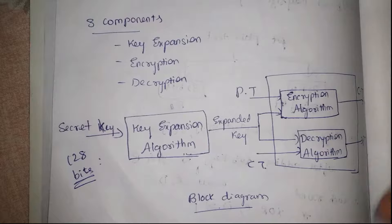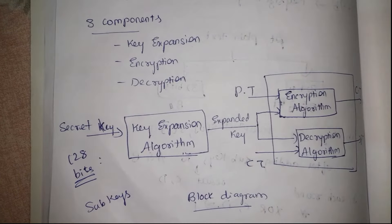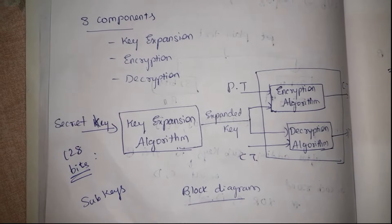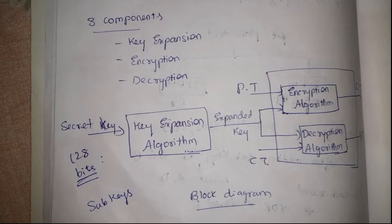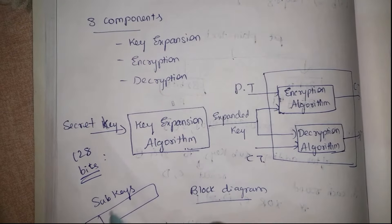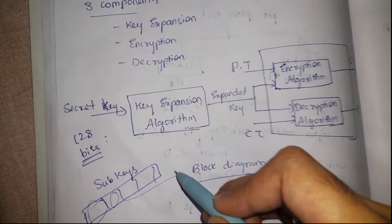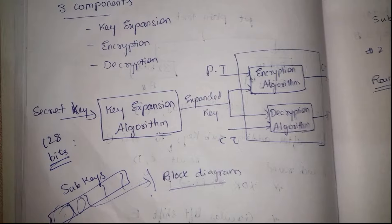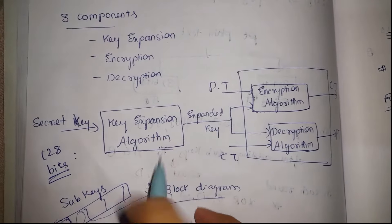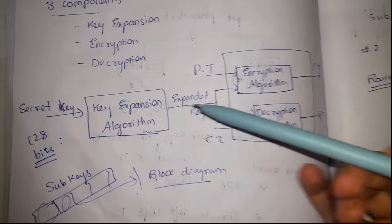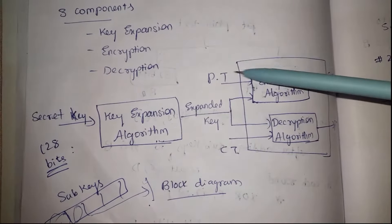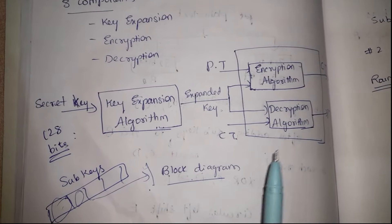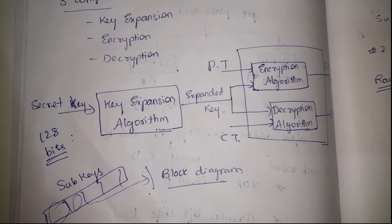Using this 128-bit secret key, the key expansion algorithm generates many sub-keys of various different sizes. Symmetric key encryption happens in a series of rounds, so in each round these sub-keys are used — in round one, round two, and so on until the end of all rounds. The sub-keys are used for encryption of the plain text and decryption. This is the block diagram of the RC5 algorithm.